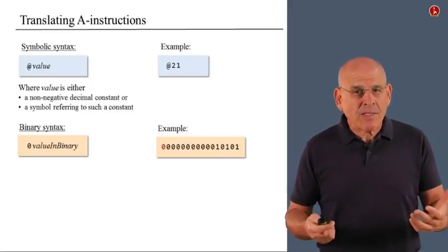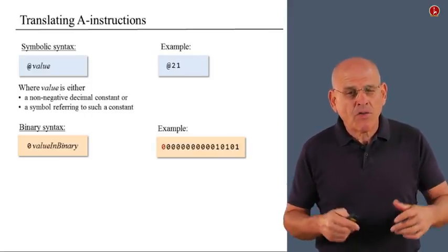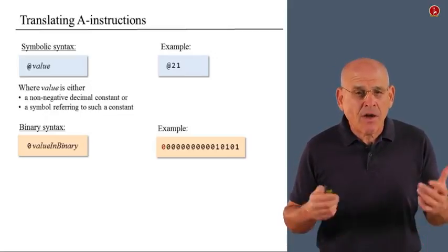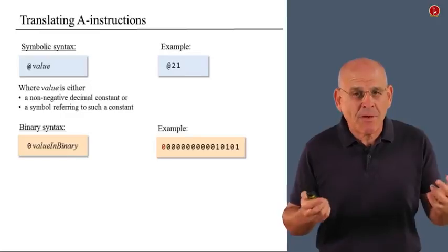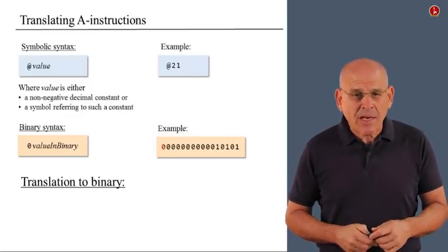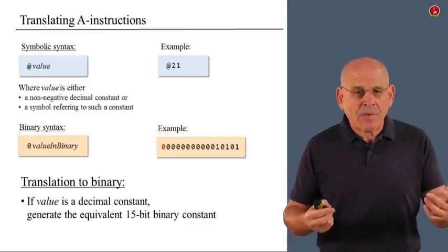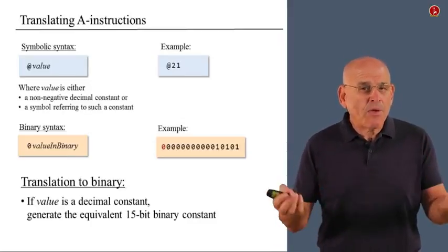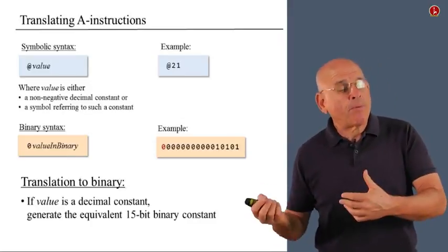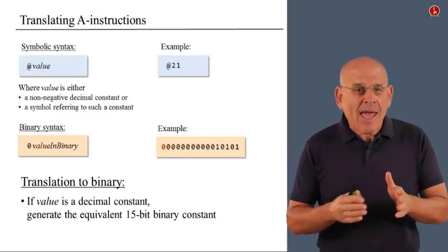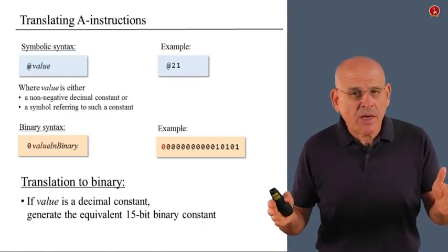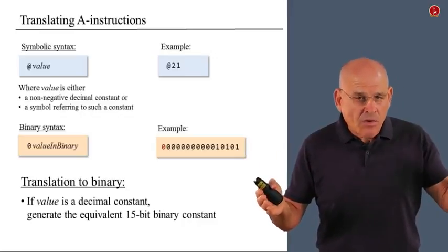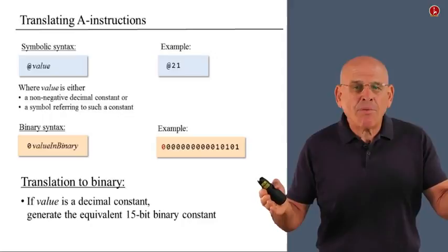So, how to translate from symbolic to binary when it comes to an A instruction? Well, if you think about it, the only challenge is to do something with this value. So, basically, if the value is a decimal constant, all we have to do is compute the binary representation of this value, add as many zeros as we need in order to turn it into a 15-bit constant, add or append the zero op code.